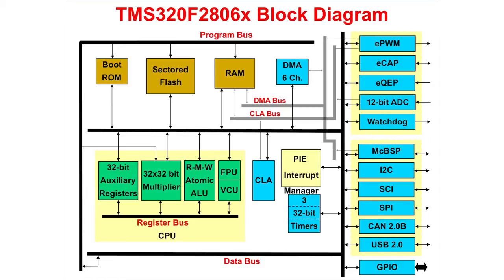The upper set is the control peripherals, which consists of the EPWM, eCapture, EQEP, ADC, and watchdog.